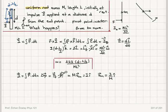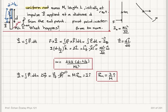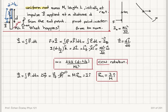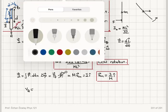So the rod rotates with angular speed omega = 12I(d − L/2)/(ml²) and translates with center of mass velocity I/m in the i-hat direction. The sense of rotation — from the direction of the applied torque — is counterclockwise. Now I can ask: what are the velocities of point A and point B on the rod?